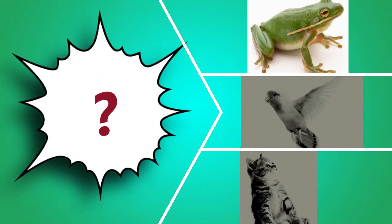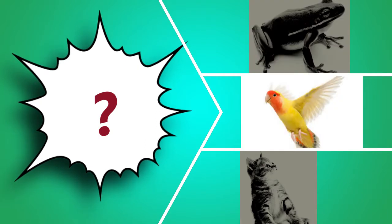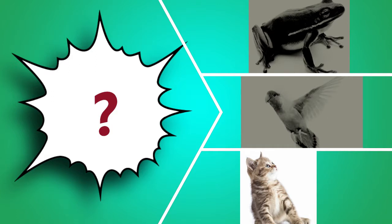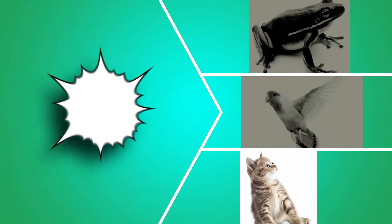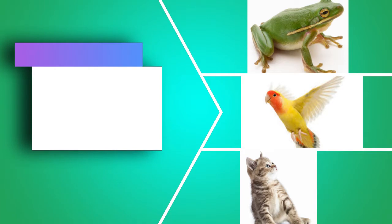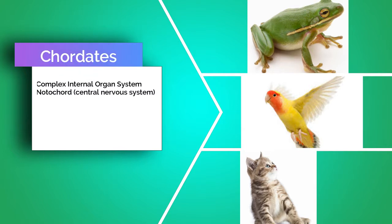We have a frog, a bird, and a mammal. Each of these have an organ system inside their bodies — just as you and I have organs inside our bodies, these creatures share the same thing. They also have what's called a notochord, or what some of us might just call a backbone — essentially a central nervous system of some kind that makes everything work. We call these chordates.